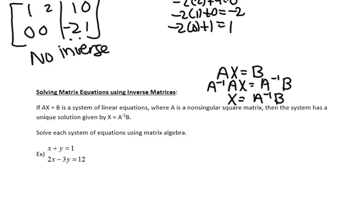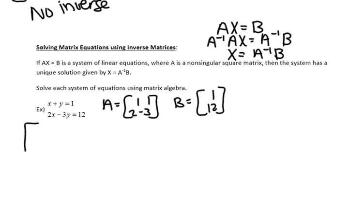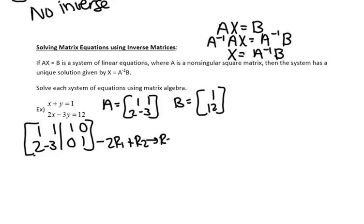I want to solve each system of equations using matrix algebra — in other words, with the inverse. In order to do that, I first want to identify that A is this matrix, and B, the answer column matrix, is this. I'm going to use A to determine its inverse. I need this 2 to be a 0, so I'll take negative 2 times row 1 plus row 2 as my new row 2.